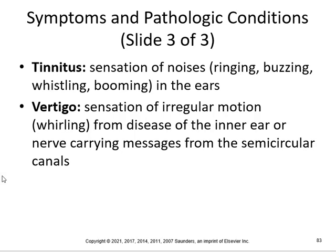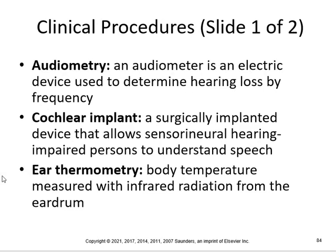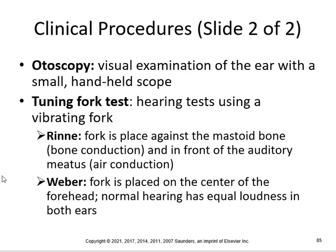Make sure you know that vertigo and tinnitus are not the same thing. Tinnitus is a sensation of noises such as ringing or buzzing. Vertigo is a sensation of irregular motion of the inner ear. Audiometry: an audiometer is an electrical device used to determine hearing loss by frequency. A cochlear implant is a surgically implanted device that allows sensorineural hearing-impaired persons to understand speech. Ear thermometry measures body temperature with infrared radiation from the eardrum. Otoscopy is a visual examination of the ear with a small handheld scope. The tuning fork test is a hearing test using a vibrating fork — the Rinne test places the fork against the mastoid bone (bone conduction) then in front of the auditory meatus (air conduction); the Weber test places the fork on the center of the forehead, with normal hearing showing equal loudness in both ears.